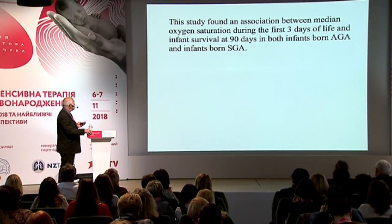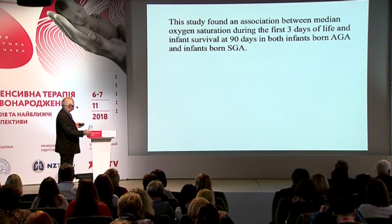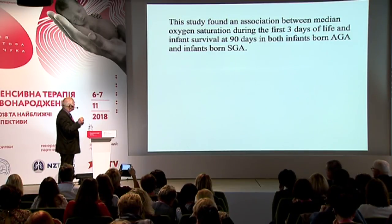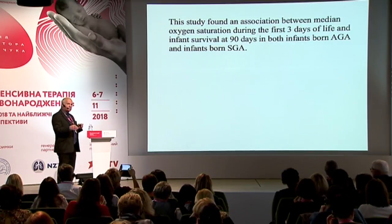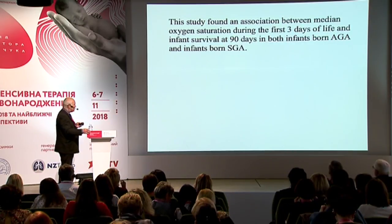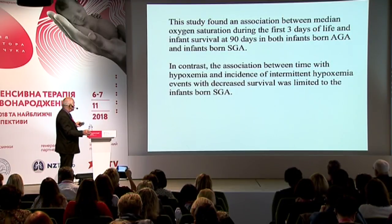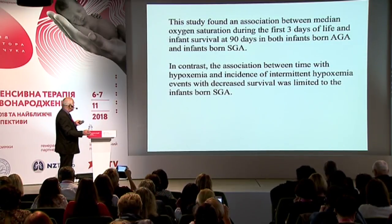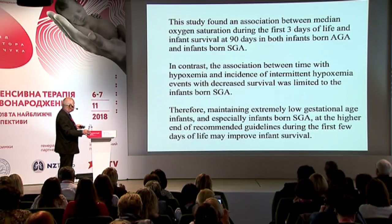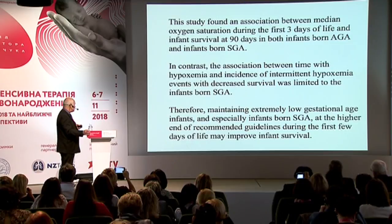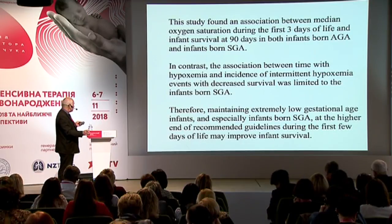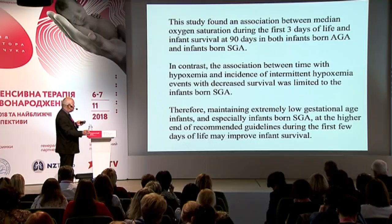The study found an association between median oxygen saturation during the first three days of life and infant survival at 90 days in both infants born appropriate and small for gestational age. The saturation in the first three days of life appears to have a long-term effect. The association between time with hypoxemia and intermittent hypoxemia events with decreased survival was limited to infants born small for gestational age. Therefore, maintaining extremely low gestational age infants—especially those born small for gestational age—at the higher end of recommended guidelines during the first few days of life may improve infant survival.